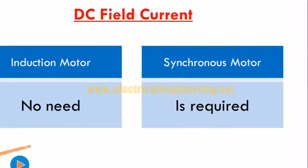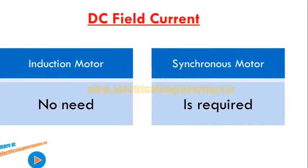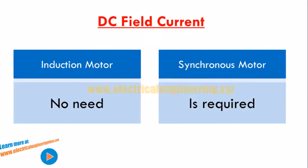DC field current. A synchronous motor always requires a separate DC field current for excitation purposes, whereas an induction motor doesn't require DC field current.